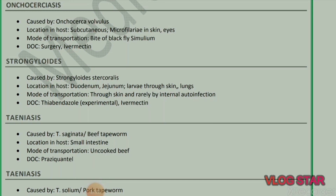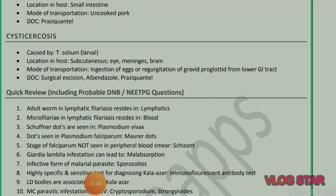Next parasite: Taeniasis. Taenia saginata, the beef tapeworm — location in host: small intestine; mode of transmission: uncooked beef; drug of choice: praziquantel. Taenia solium, the pork tapeworm — location in host: small intestine; mode of transmission: uncooked pork; drug of choice: praziquantel.